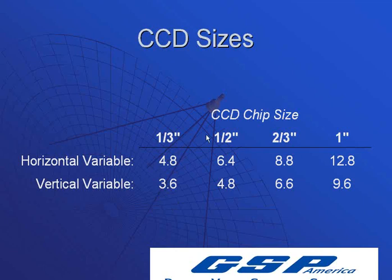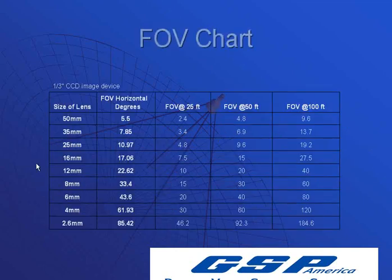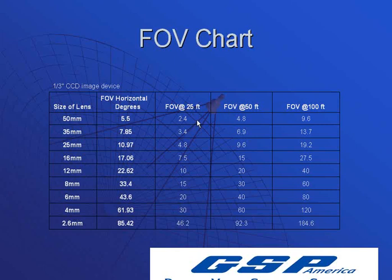Here's just a basic chart to give you an idea based on the 1/3-inch chip size. If you have a 50-millimeter lens, your horizontal field of view in degrees is 5.5. At 25 feet, your field of view is 2.4 feet wide. At 50 feet, you can see 4.8 feet. At 100 feet, you can see 9.6 feet in width in your horizontal view. This chart goes down through different lens options.